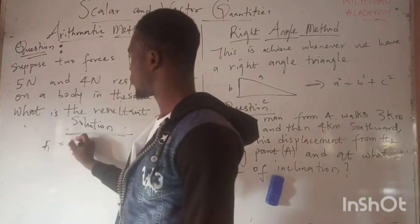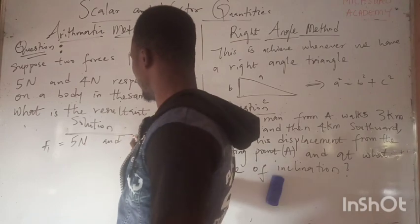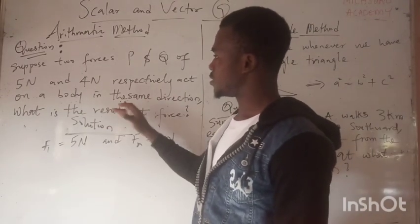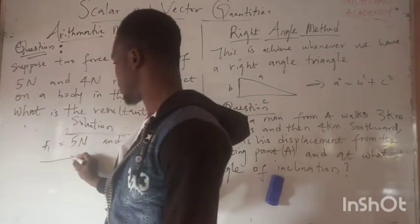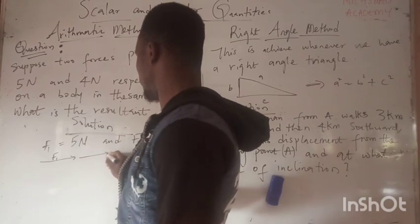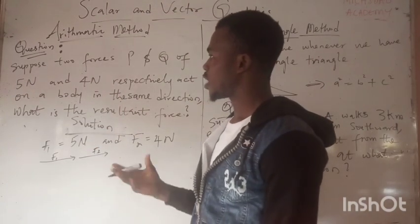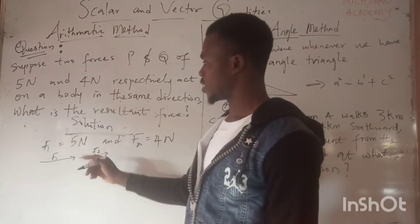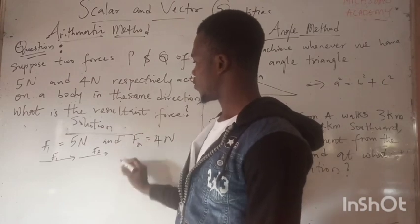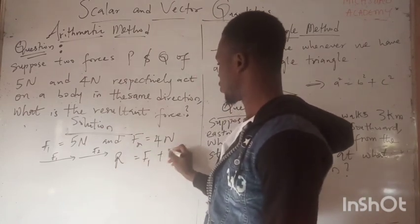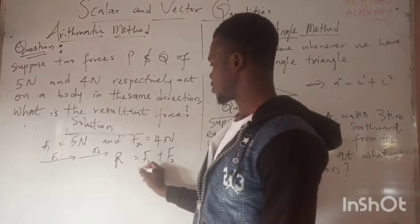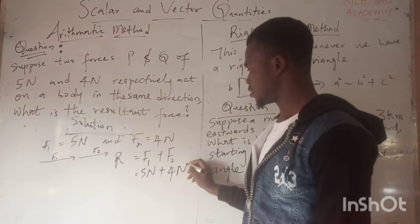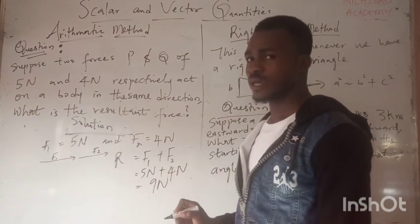For the arithmetic method, let F1 equal 5 Newtons and F2 equal 4 Newtons. They act in the same direction, so the resultant is the sum of the two. Since they are moving in the same direction, the resultant equals F1 plus F2: 5 Newtons plus 4 Newtons equals 9 Newtons.